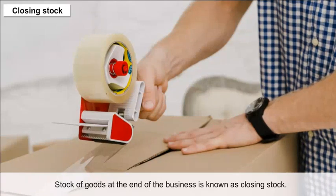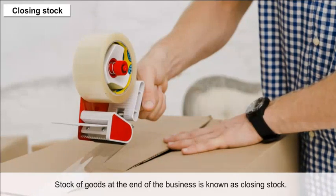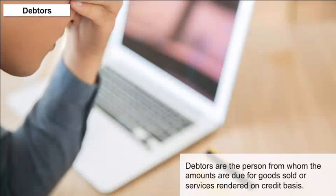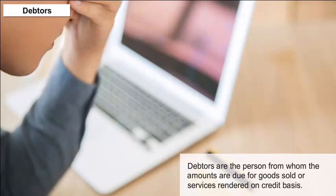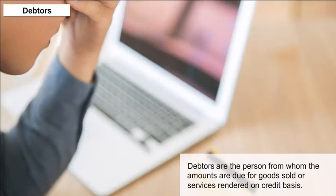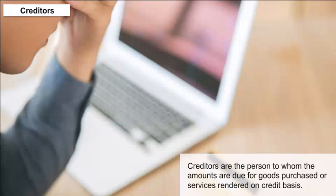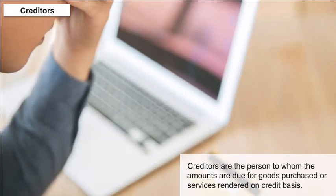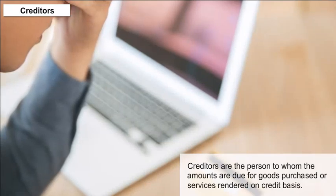Key Terms — Debtors and Creditors: Debtors are persons from whom amounts are due for goods sold or services rendered on a credit basis. Creditors are persons to whom amounts are due for goods purchased or services received on a credit basis.